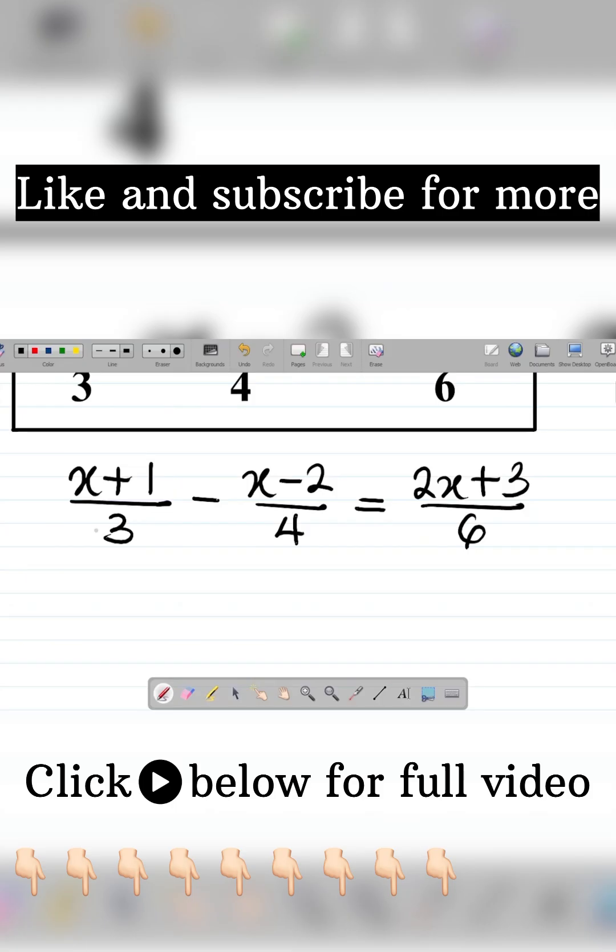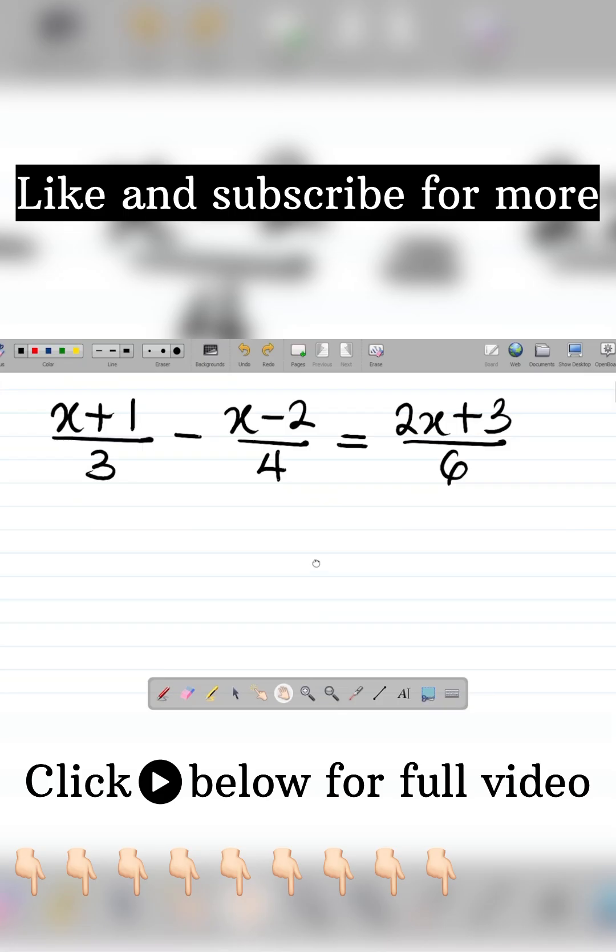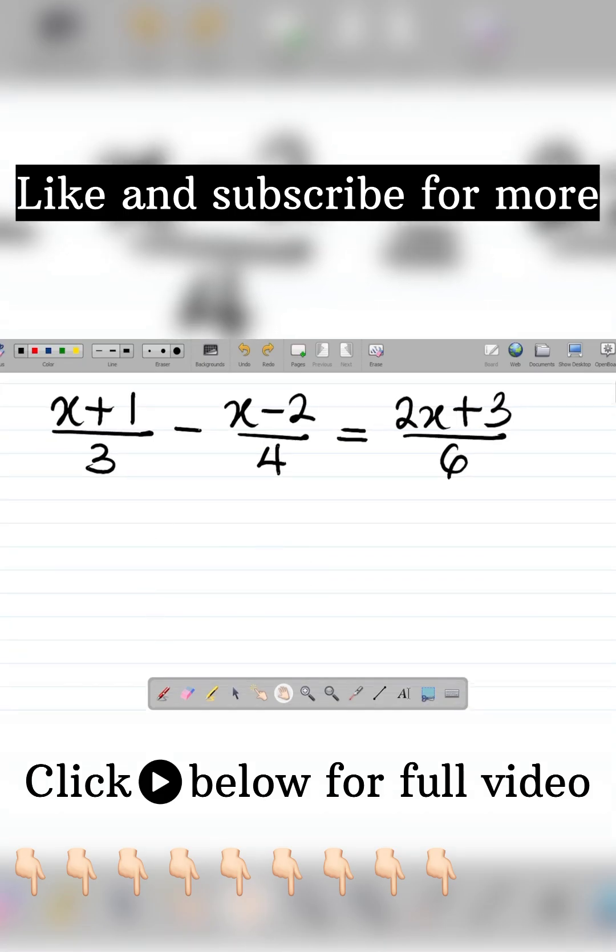What's the first thing I'll do? For the terms on the left-hand side, my first task will be to take the LCM. If I take the LCM of the terms on the left-hand side, for 3 and 4, the LCM is 12.